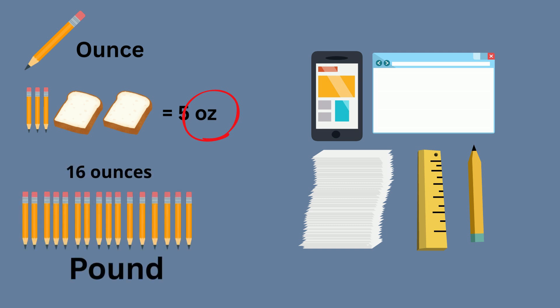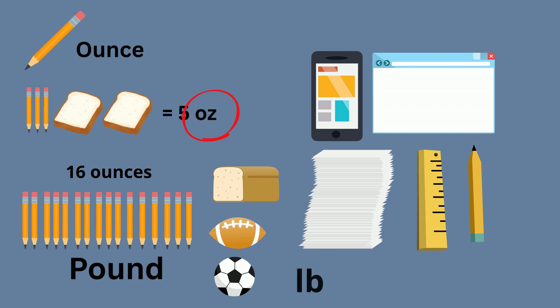16 ounces make up a pound. A loaf of bread weighs roughly a pound, a football weighs about a pound, and a soccer ball weighs roughly a pound. The abbreviation LB is used for pounds.